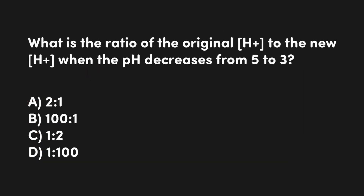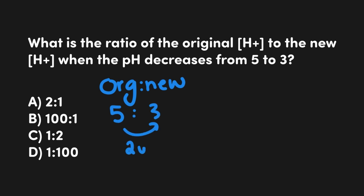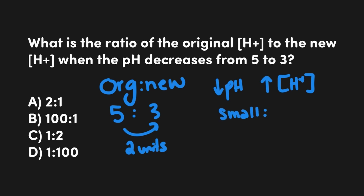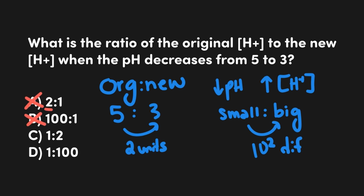Let's round this out with one last question: what is the ratio of the original H+ concentration to the new H+ concentration when the pH decreases from 5 to 3? First, the difference is 2 units and the pH is going down, so the H+ concentration went up — meaning the original H+ concentration is smaller and the new H+ concentration is bigger. We can eliminate A and B since those don't fit. Choosing between C and D, a 2-unit difference corresponds to a 2 factor-of-10 difference, which is 100. Therefore, the correct answer is D — a 1 to 100 ratio of the original H+ concentration at pH 5 to the new H+ concentration at pH 3.